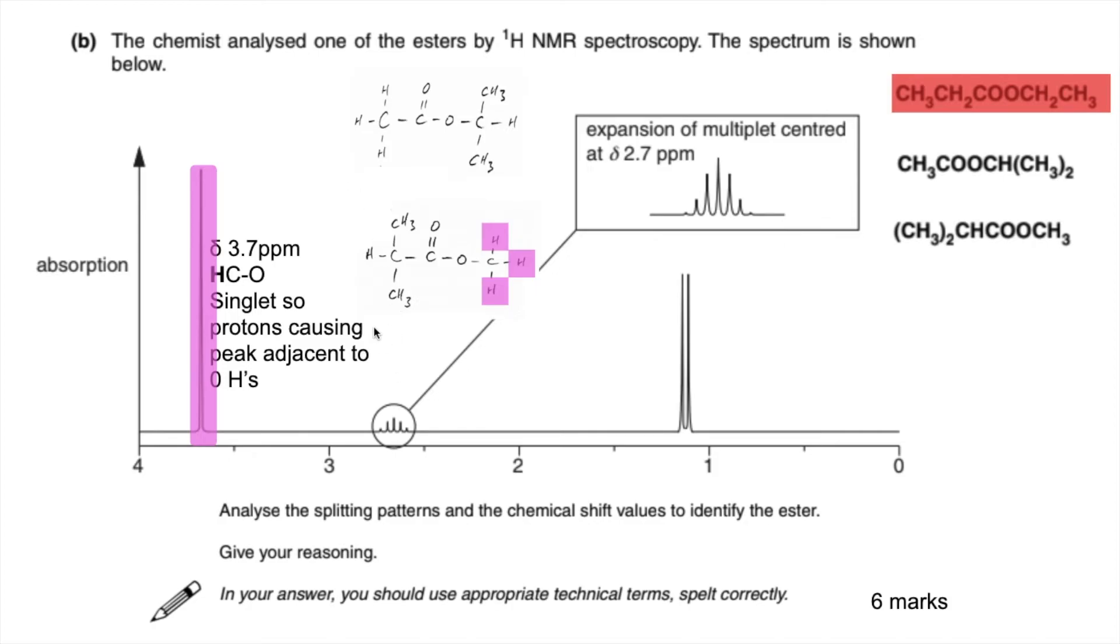So if we move on to this multiplet now. If we count the number of peaks in the expanded signal: one, two, three, four, five, six, seven. So this signal here at delta 2.7 is due to the H to C to C double bond O environment. So that's the other side of the ester bond. H to C to C double bond O. You can see that's a heptate. So this proton here will be split into seven by these two CH3s. Whereas this one here would come out as a singlet because it's too far away from anything over here. So that's obviously that one there.